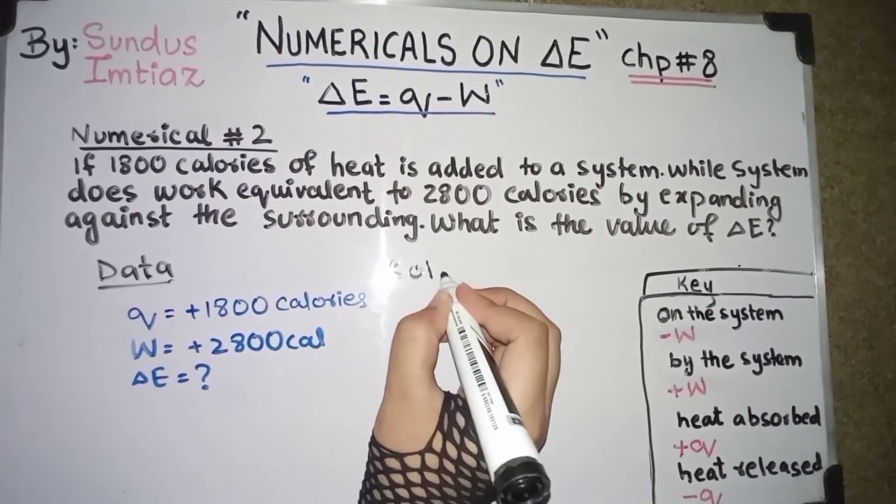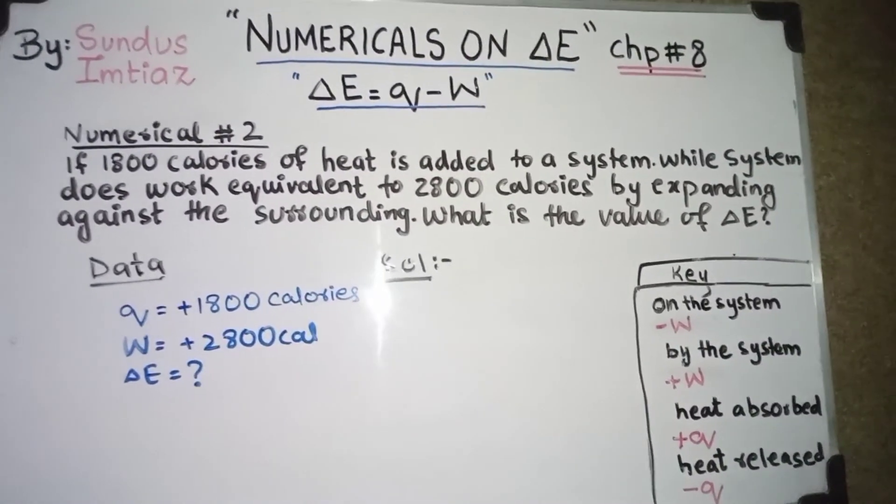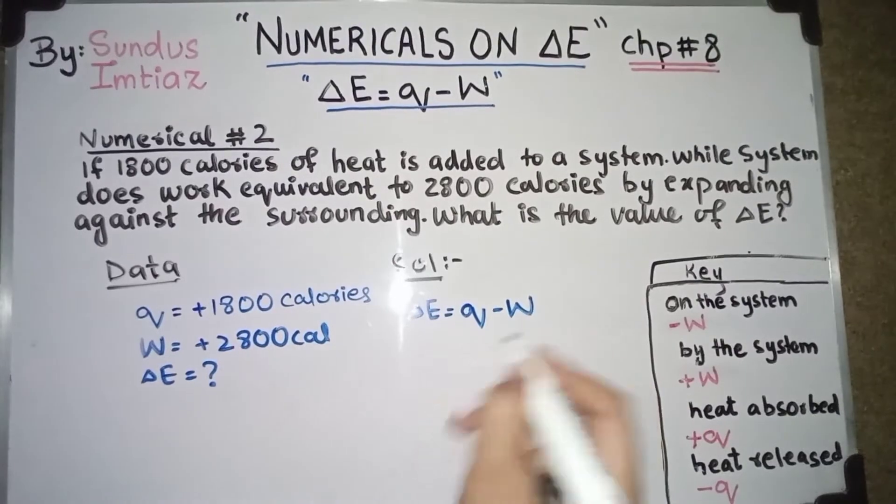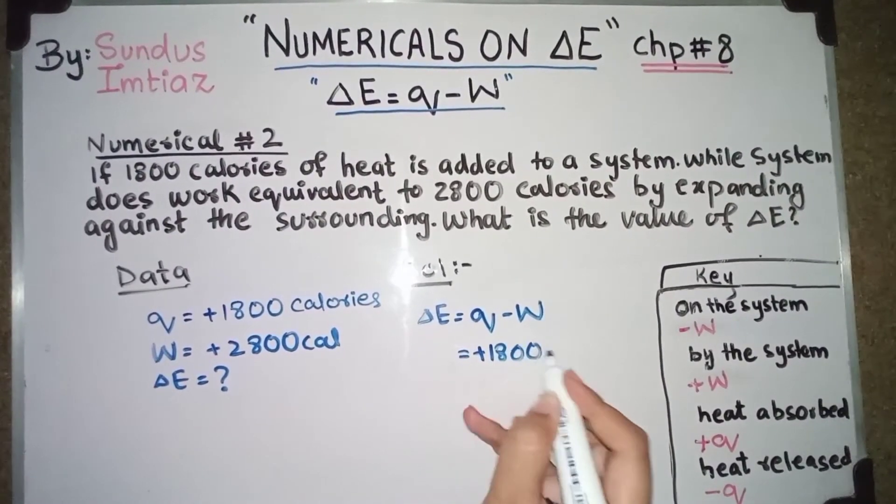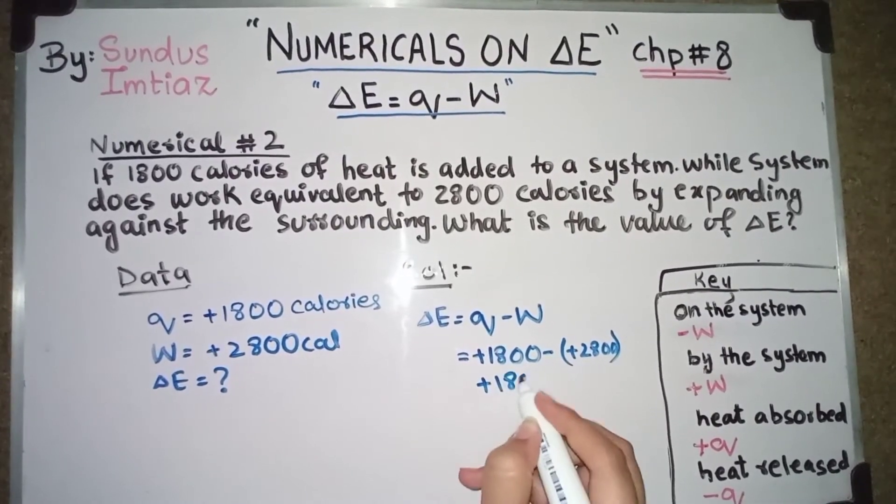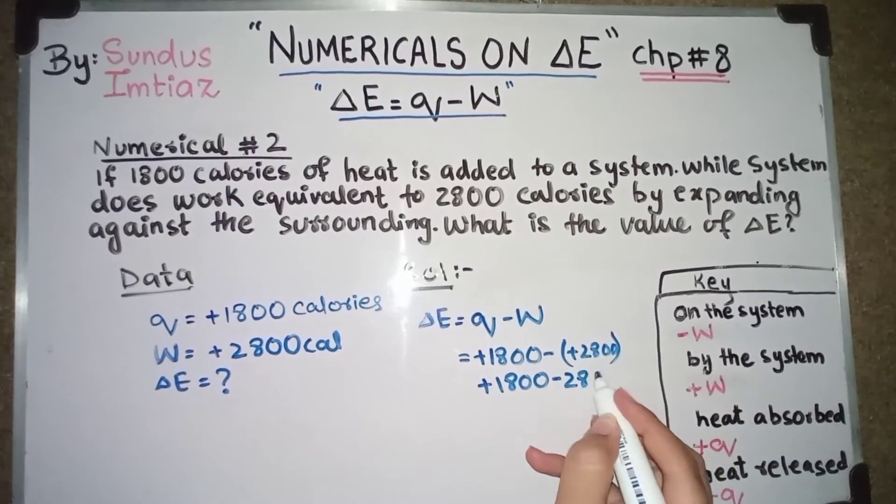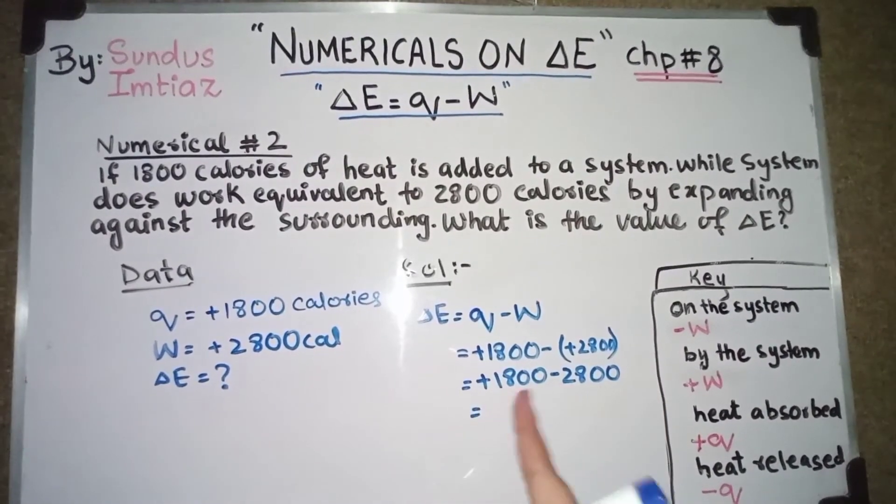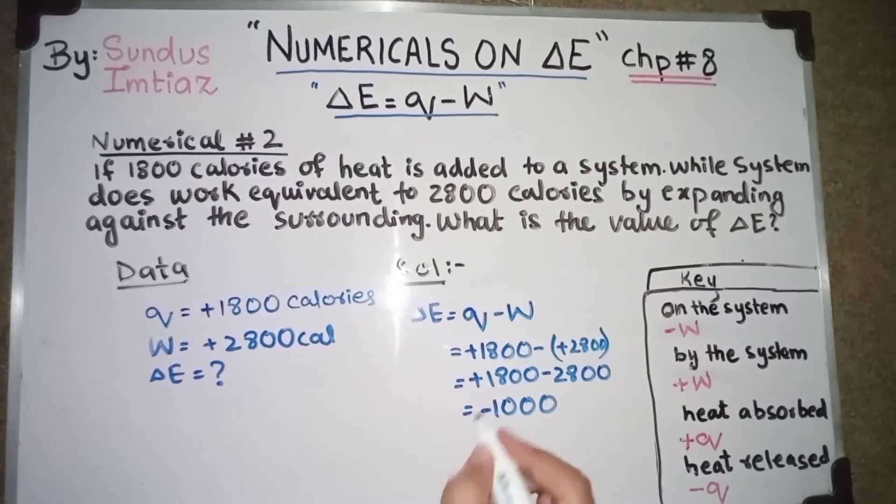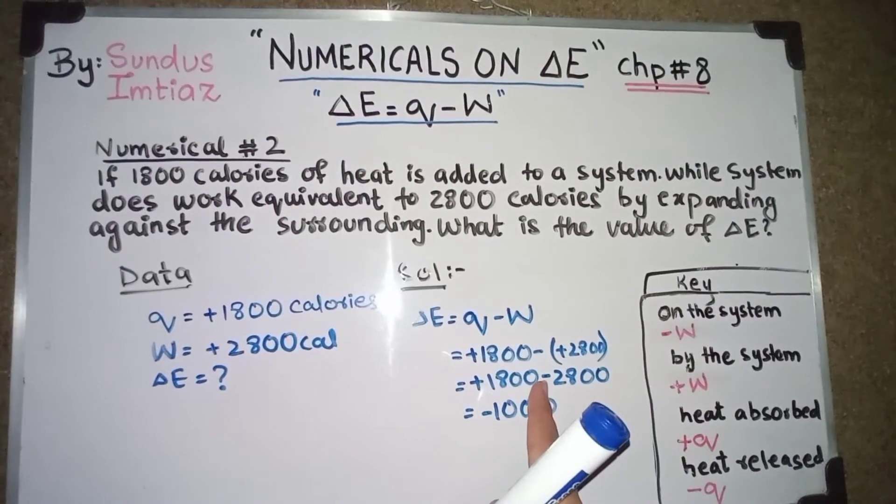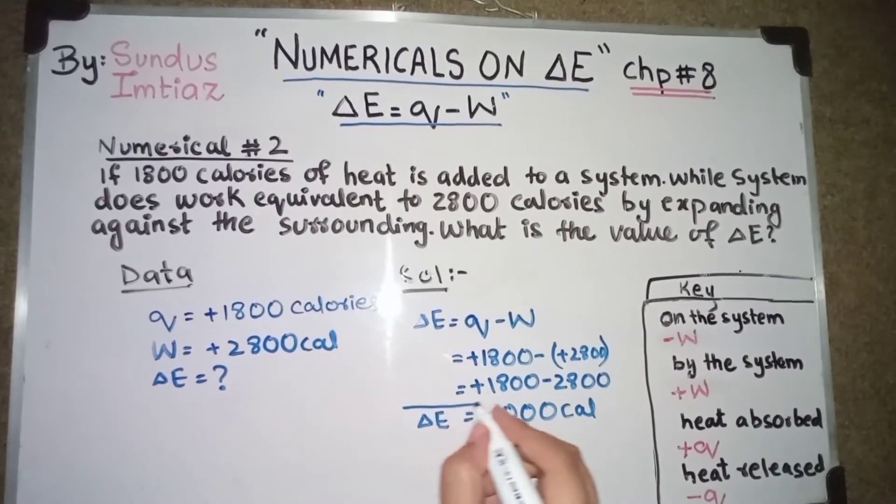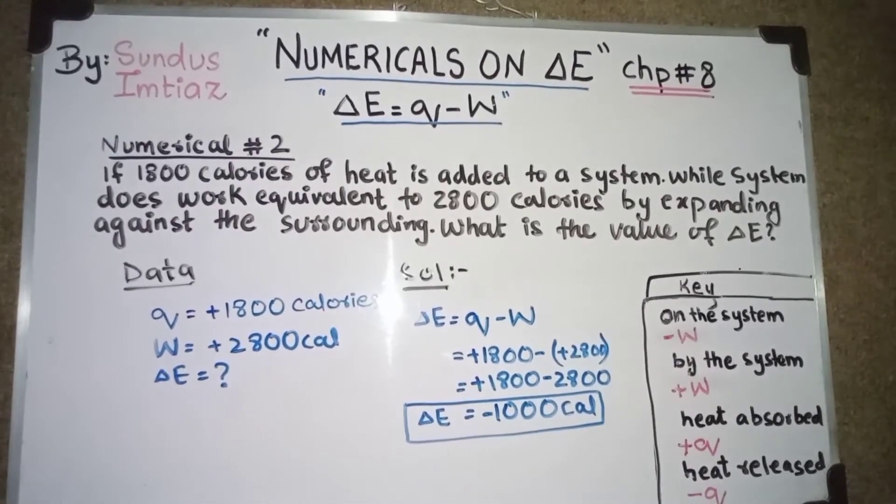Its solution. Again change in energy is equals to Q minus W. The heat is plus 1800 minus the work is plus 2800. So 1800 minus 2800. After subtracting both these values, we get 1000. But with the negative sign. Why? Because the greater number bears negative sign. So it will be in calories. This is the change in internal energy.